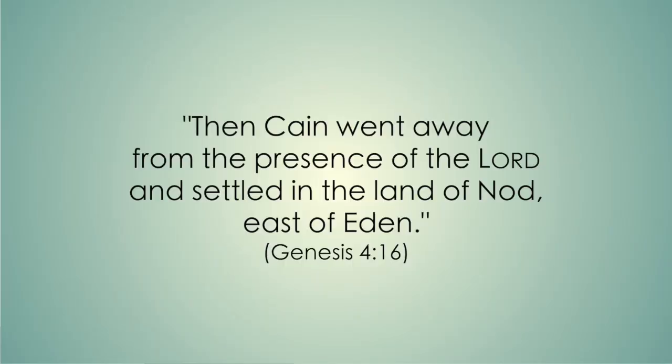Even earlier than that, in the opening chapters of the Bible, we already get a glimpse of this idea. Genesis chapter 4, verse 16, says this, 'Then Cain went away from the presence of the Lord and settled in the land of Nod, east of Eden.' If you remember, Jonah did the same thing. It says that he fled away from the presence of the Lord. Now, think about it. How could Cain, how could Jonah escape the presence of an omnipresent God?